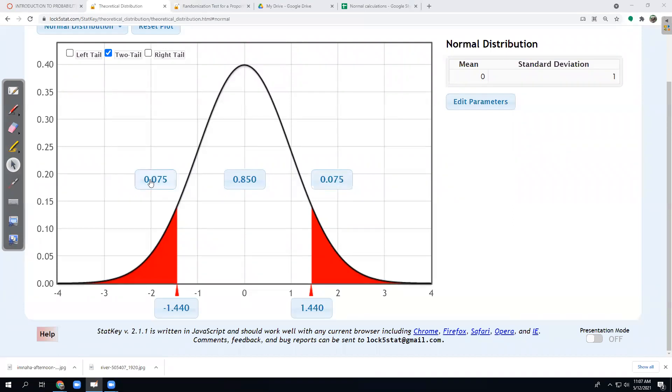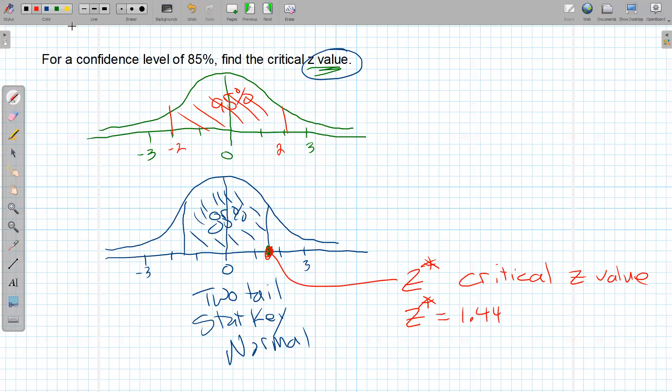Now, StatKey fortunately told me, if there's 85 in the middle, there should be 7.5 in the tail. So if I think about that for a second, 85 to 100 percent is 15 percent. The tails have to split that 15 percent. So that's that 7.5 percent. So other notation for this that's going to be important and come up: this is called the confidence level. It's often abbreviated CL. And in this case, it is 85 percent or 0.85. So that's in the middle.